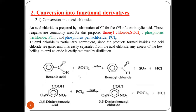The second reaction of carboxylic acid is conversion into its functional derivatives. First is conversion into acid chloride. Acid chloride is prepared by substitution of chloro for the OH of the carboxylic acid. Three reagents are commonly used; thionyl chloride is particularly convenient since the byproducts — SO₂ and HCl — are gases and thus readily separated, giving more pure benzoyl chloride as the product.